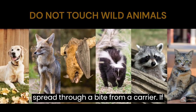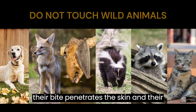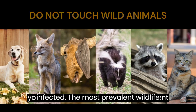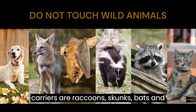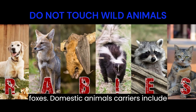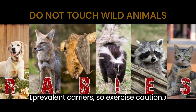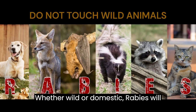Rabies is spread through a bite from a carrier. If the bite penetrates the skin and saliva enters the muscle, you've been infected. The most prevalent wildlife carriers are raccoons, skunks, bats, and foxes. Domestic animal carriers include cats, cows, and dogs. Dogs are the most prevalent carriers, so exercise caution whether the animal is wild or domestic.